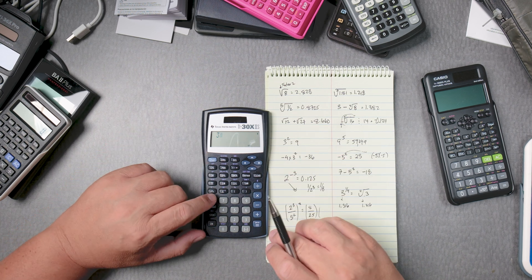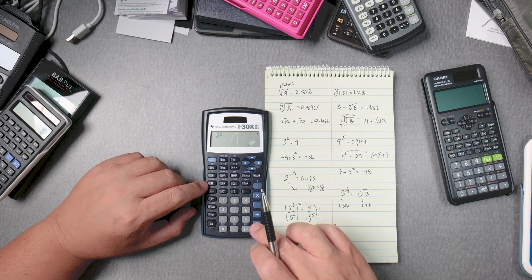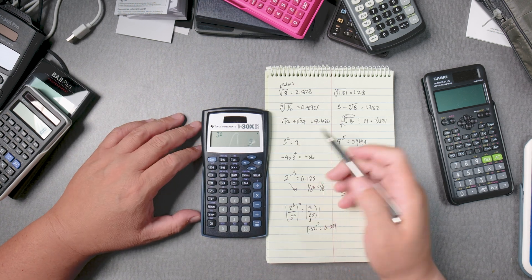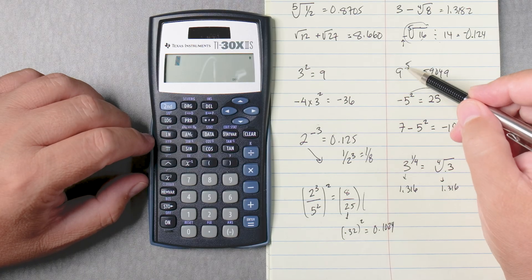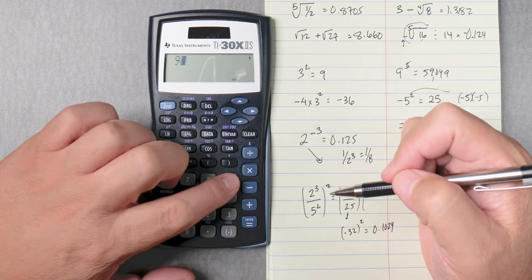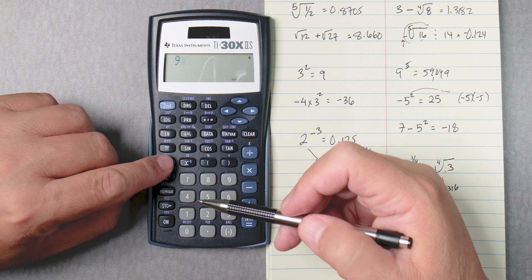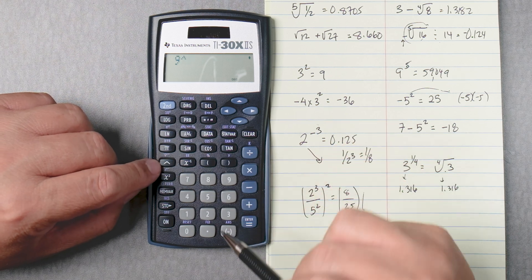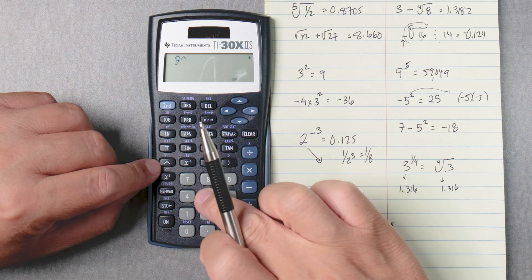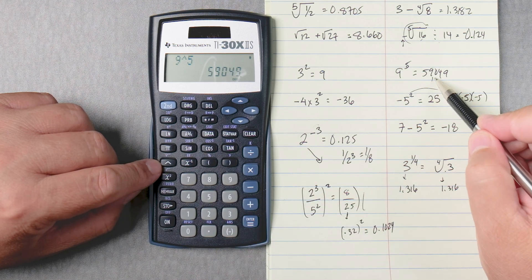3 squared, and there's the square button, equals 9, yes. So we're going to do 9 to the fifth power. So this one, you're going to click on 9, and then you're going to use the caret key, which is very interesting key for this calculator, and then 5 equals. And that's going to give you 59,049.